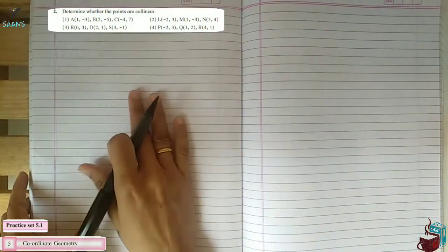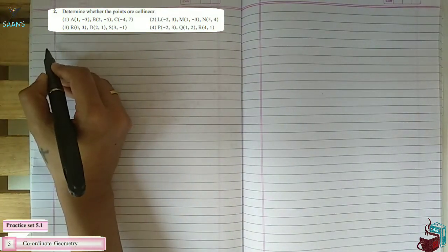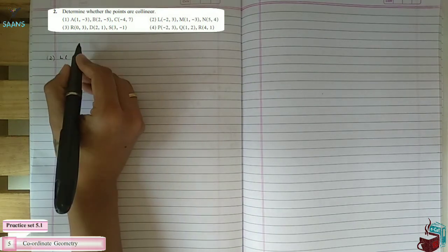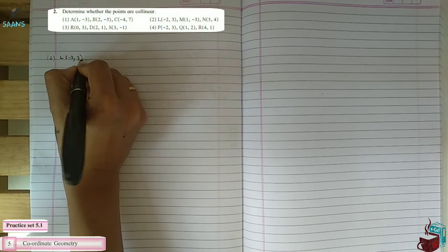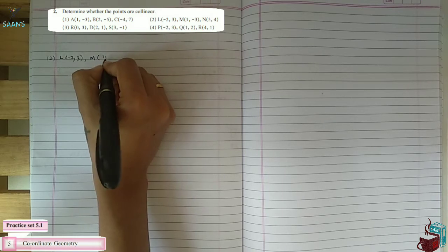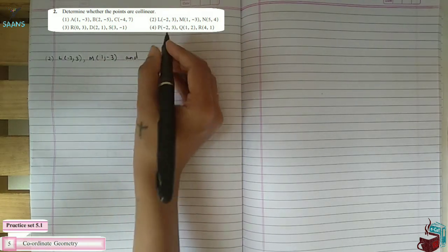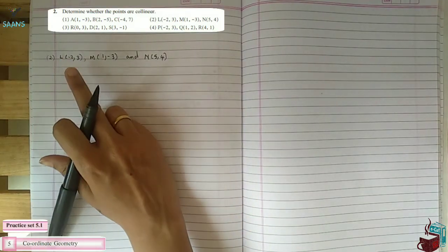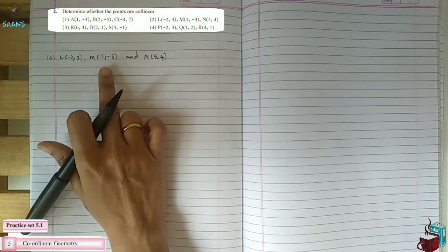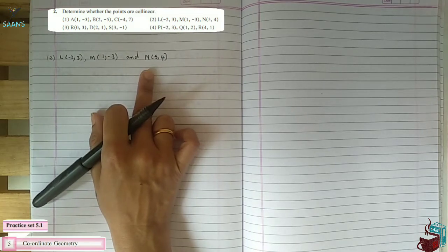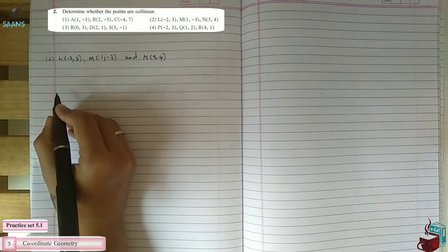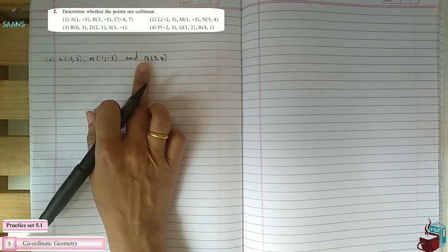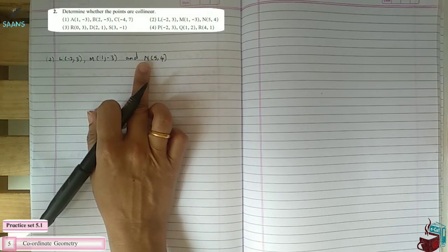Sum number 2: determine whether L(-2, 3), M(1, -3), and N(5, 4) are collinear. To do this, find the distance between all three pairs: LM, MN, and LN. Keep the greatest distance and add the remaining two — if they equate, the points are collinear.